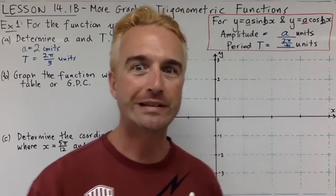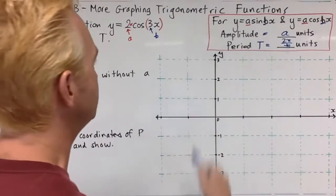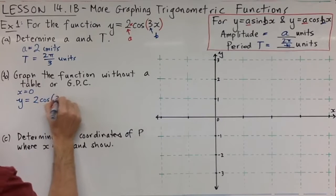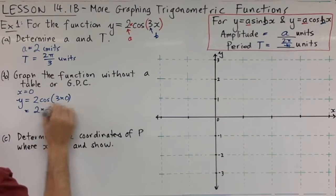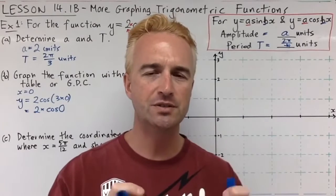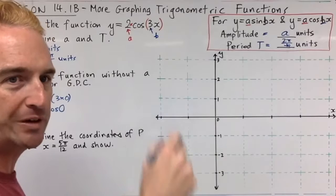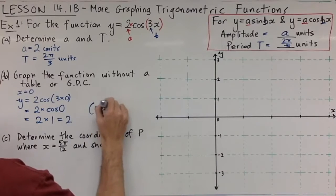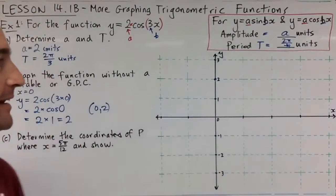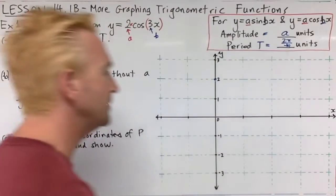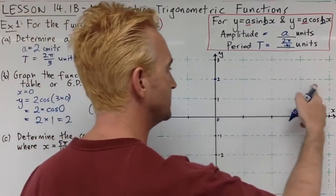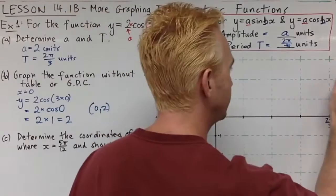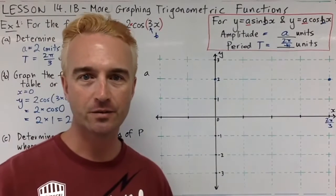Now we're going to graph this knowing that information — we'll plot a few points using what we know about the shape of cosine. When x equals zero, y equals 2 cos(3 times 0), which is 2 times cos(0). Cos zero is 1, so this gives us the point (0, 2). We know our period is 2 pi over 3, so one full period later the curve will be back up at (2π/3, 2). We've already got two points from just one calculation.